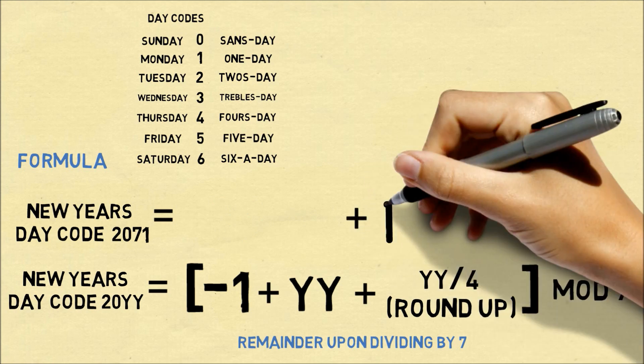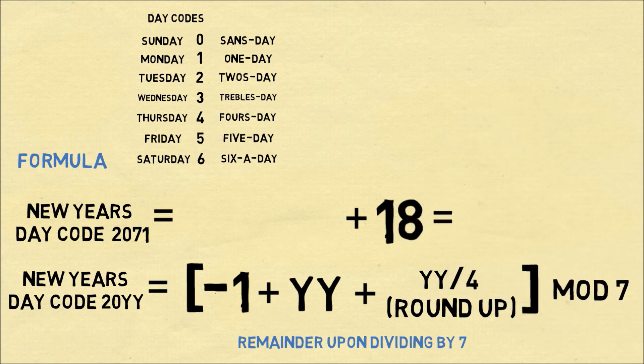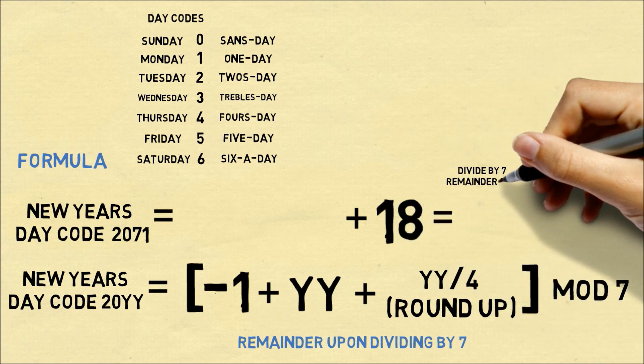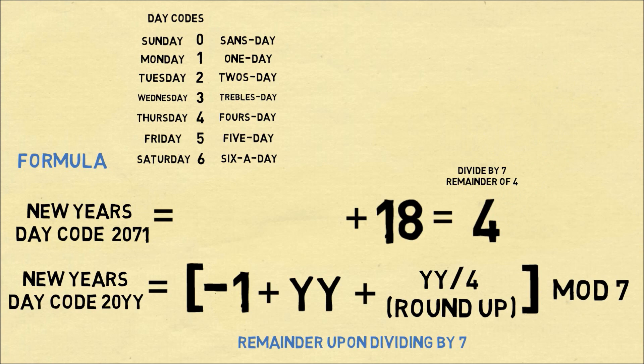The final term is 71 divided by four rounded up, which is 18. We then consider the remainder of this from seven, which is four. So that means four is our day code. And therefore, 2071 will start on a Thursday.